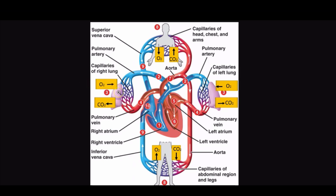Once the blood vessels have oxygenated blood, it is now arterialized blood. The arterialized blood comes back to the left side of the heart through the pulmonary veins. Once it's in the left atrium, it will pass through the mitral valve, which is also known as the bicuspid valve, into the left ventricle.